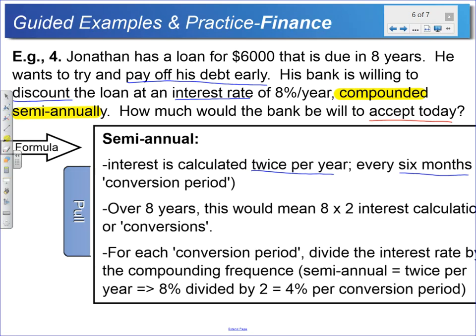Over the eight years, if John took the full time to pay that off, for every year for eight years he would pay that twice a year, over every six months, resulting in 16 interest periods or conversion periods.